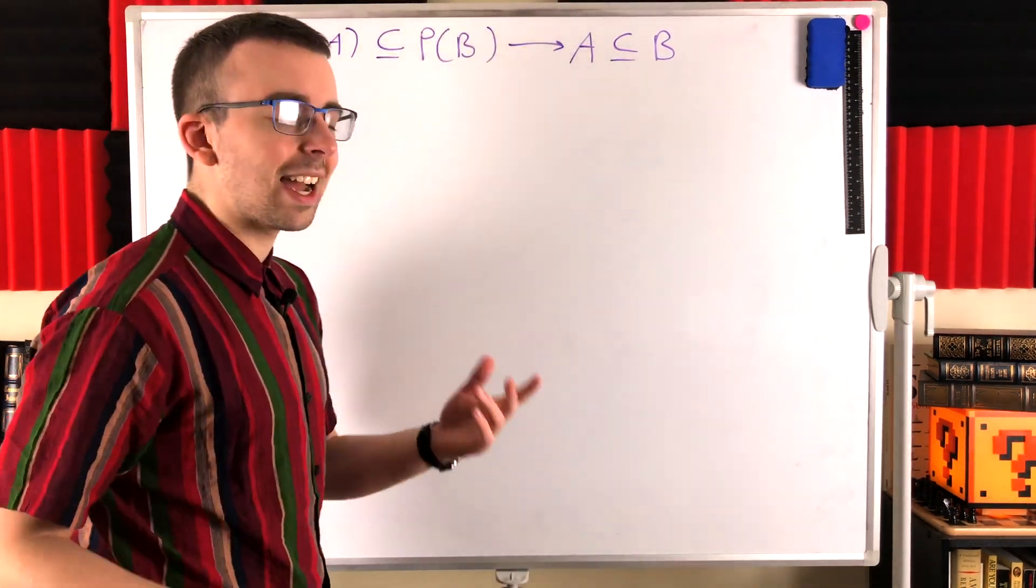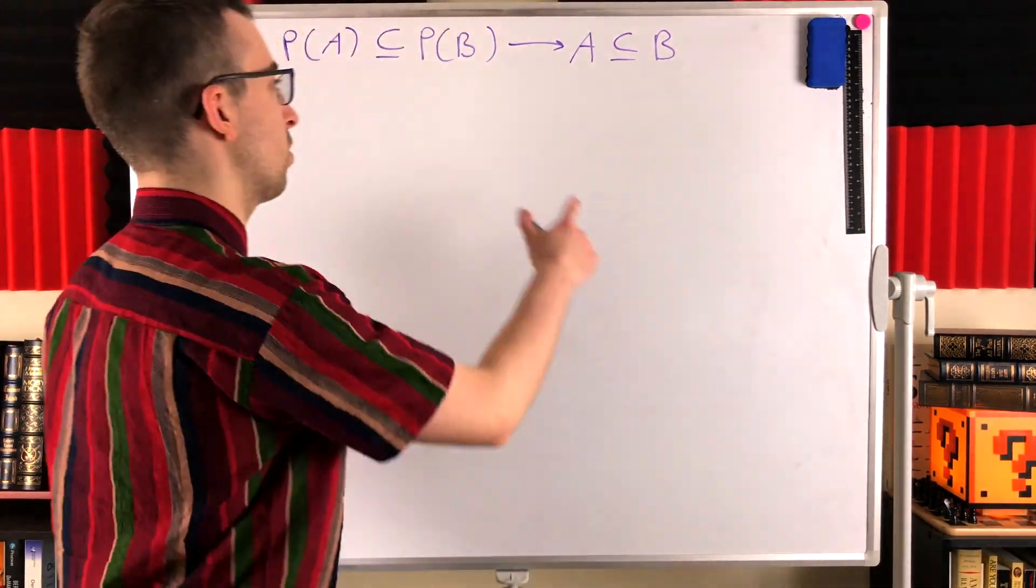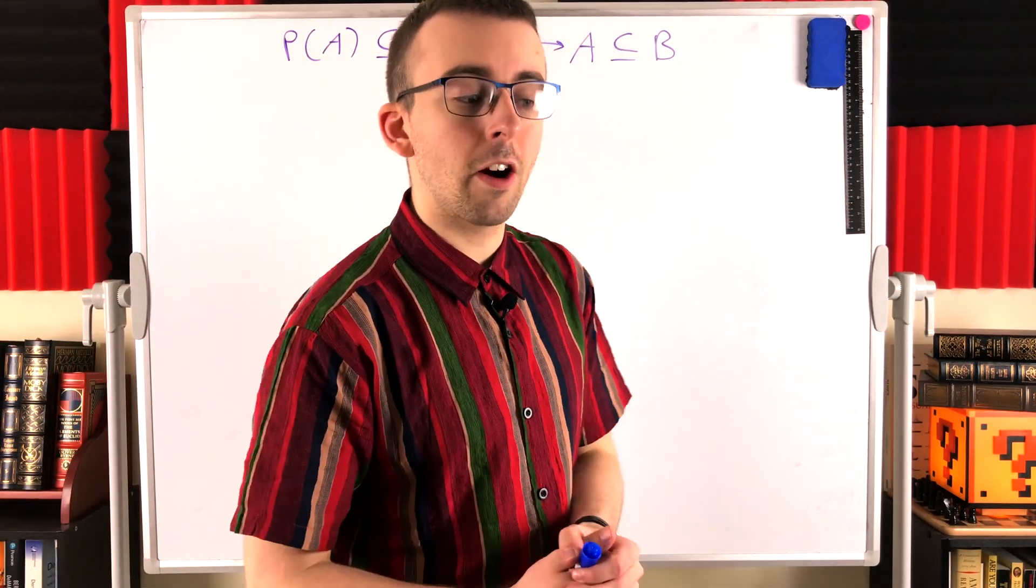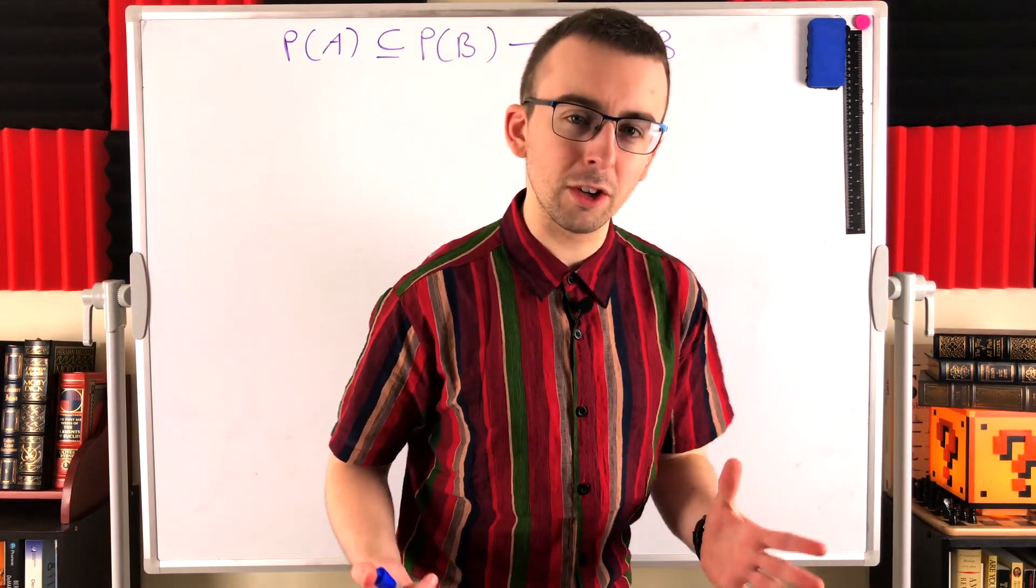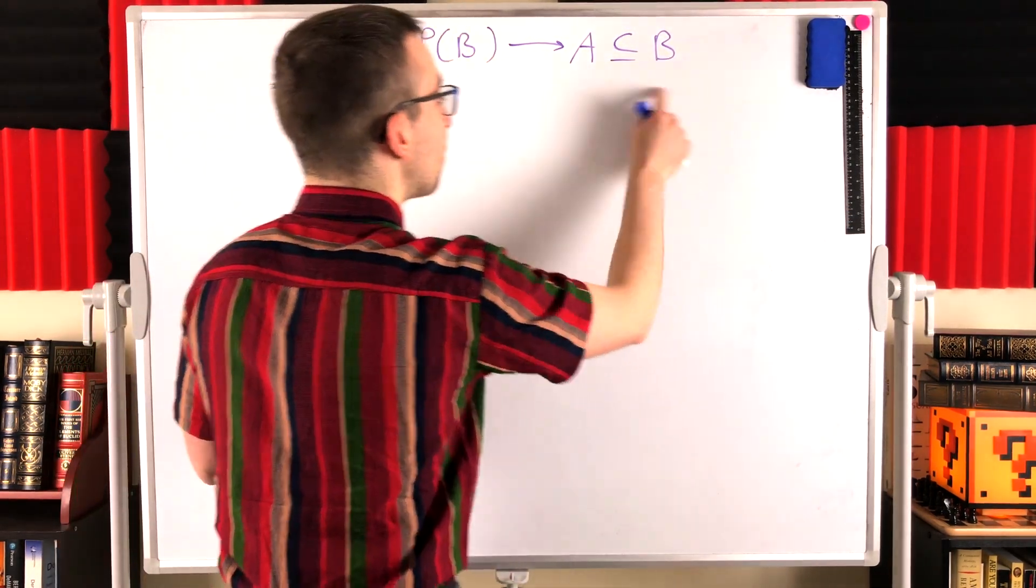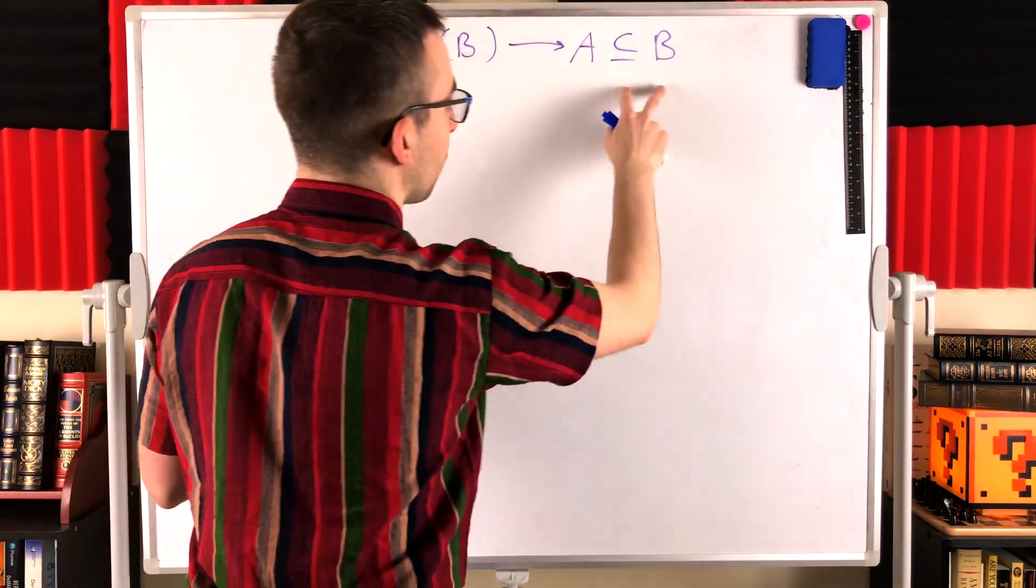For this problem, Venn diagrams aren't really going to help us out that much with power sets, not super useful. So the next good place to start would be just starting with your definition. And we want to walk from, we want to use the definition of subset to show that this is going to force this.